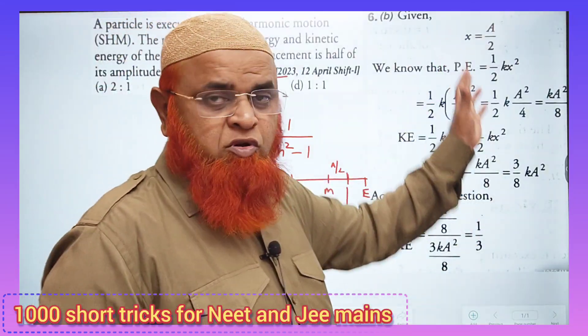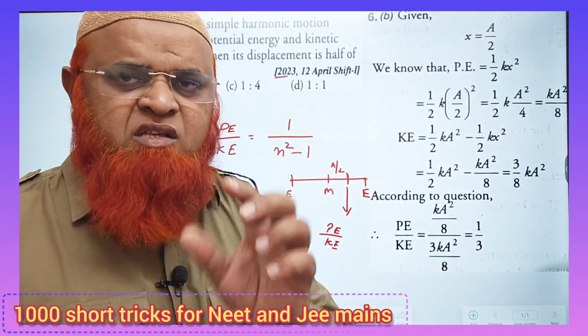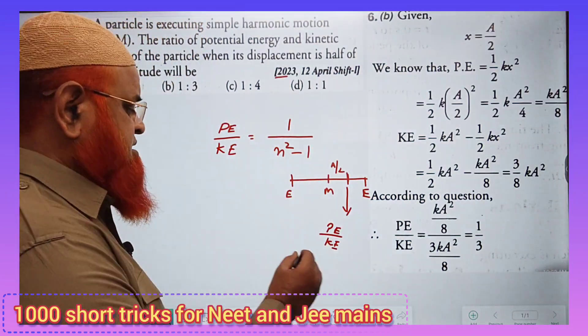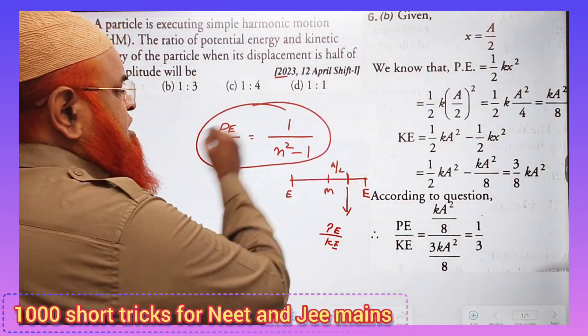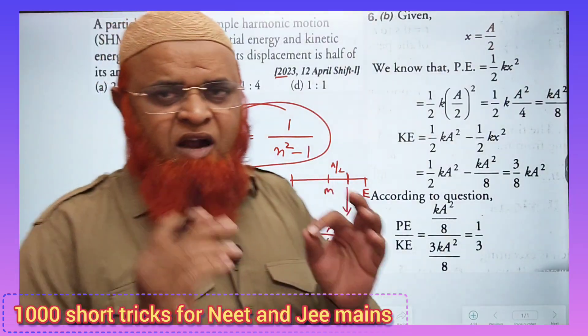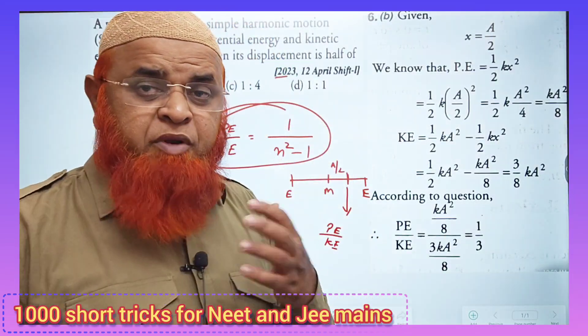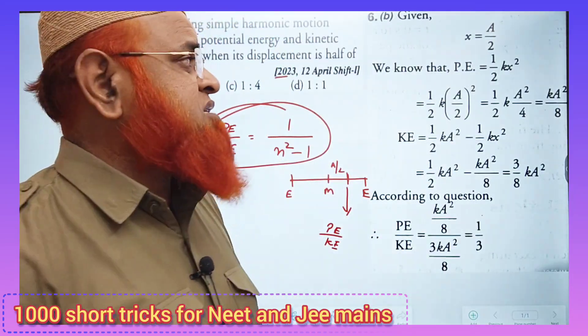And this is the textbook method which is a very lengthy method. I have given a very simple short trick that this is going to be our short trick formula. What I have done, I will teach you how to prepare your own short tricks also. What is that short trick I have done?